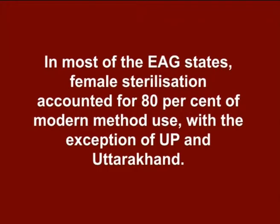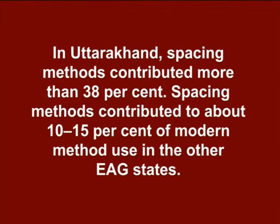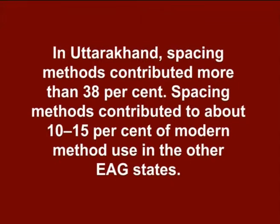The proportion of limiting method users has hardly changed over different survey periods, from NFHS-1 in 1992–93 to DLHS-3 in 2008–09 for the country. In most of the EAG states, female sterilization accounted for 80% of modern method use, with the exception of UP and Uttarakhand. In UP, female sterilization accounted for about 56% of modern method use while spacing methods accounted for 44%. In Uttarakhand, spacing methods contributed more than 38%, compared to about 10–15% in the other EAG states. Over the last 18 years, a declining trend in male sterilization and intrauterine contraceptive devices has been noted in most EAG states.